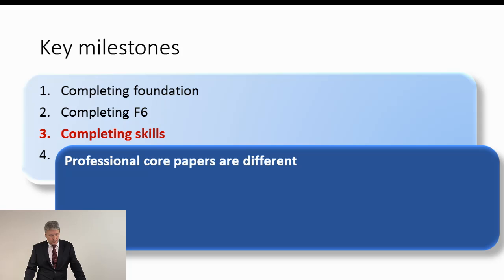Moving on. Completing the skills papers. So, okay. We're moving up a bit. We've done F1 to 3, that's foundation. We've done F4 through to F9. You've completed F9. What changes? Well, again, the professional core, that's P1, P2, P3, are different. Firstly, there are professional marks. What we mean by this is that there are marks that are set aside for the quality of your work that goes beyond just answering the question. So, for example, the depth of argument may be that much more important, or the quality of advice that you give, or something of this nature. So, it makes it different.